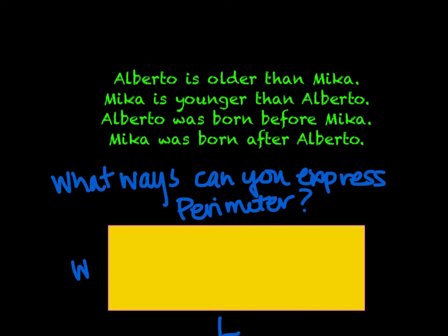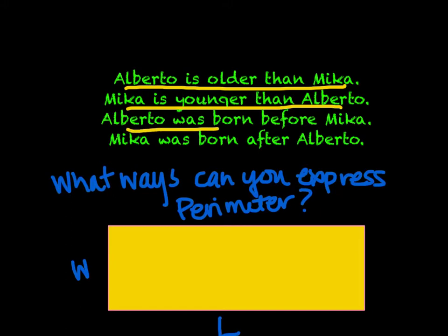Here's one possibility to relate it to real life: Alberto is older than Mika, and another way to say that is Mika is younger than Alberto. We could also say Alberto was born before Mika, and Mika was born after Alberto. Those are four different ways of saying the exact same thing — that's the concept of equivalent expressions: being able to say something one way but think about it from a different perspective.